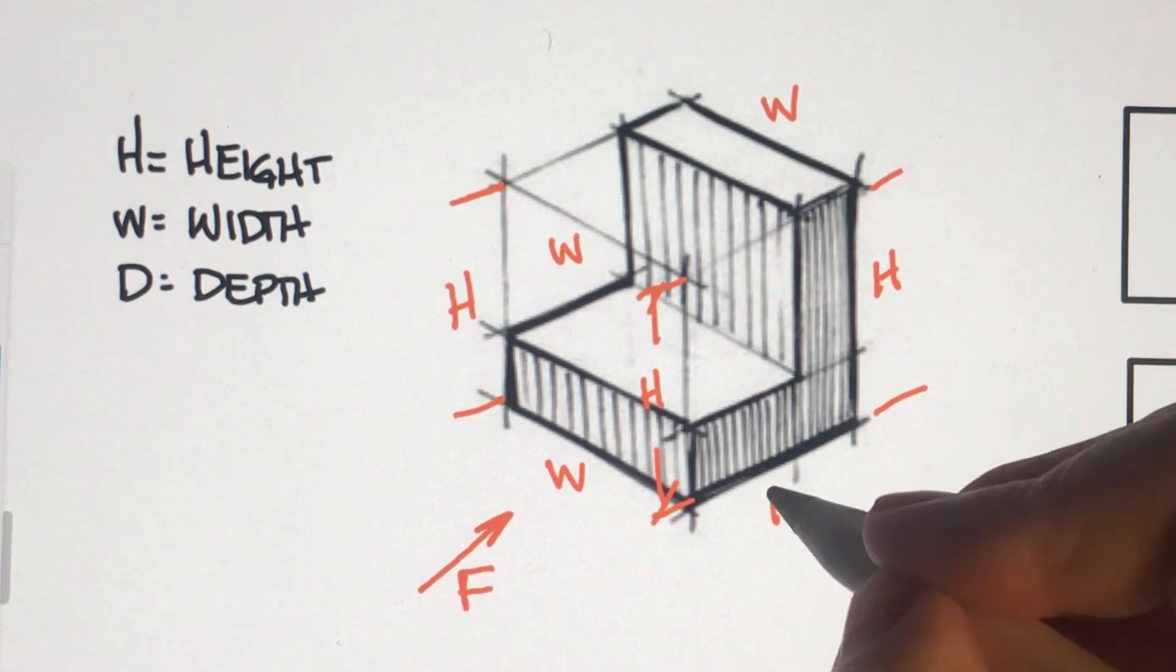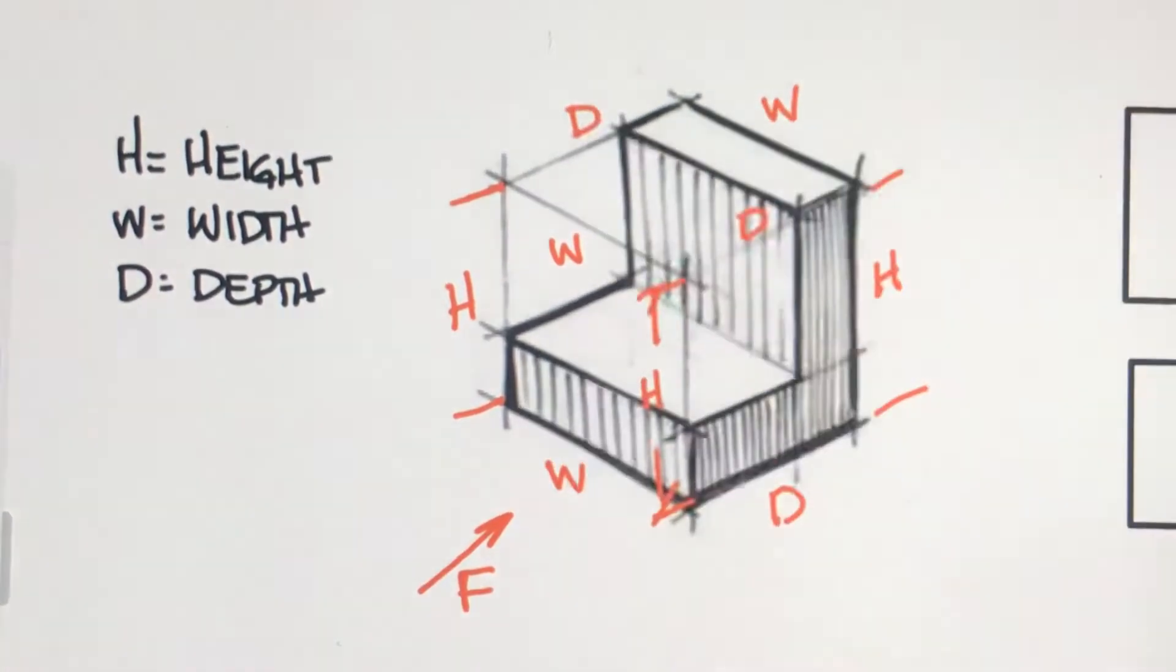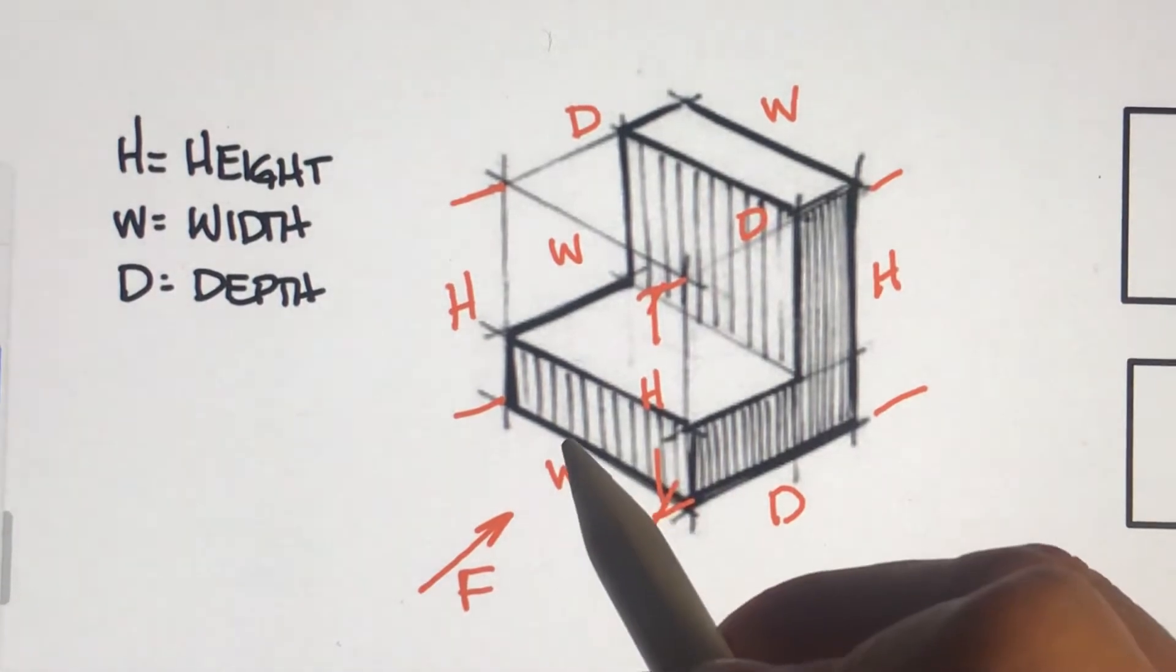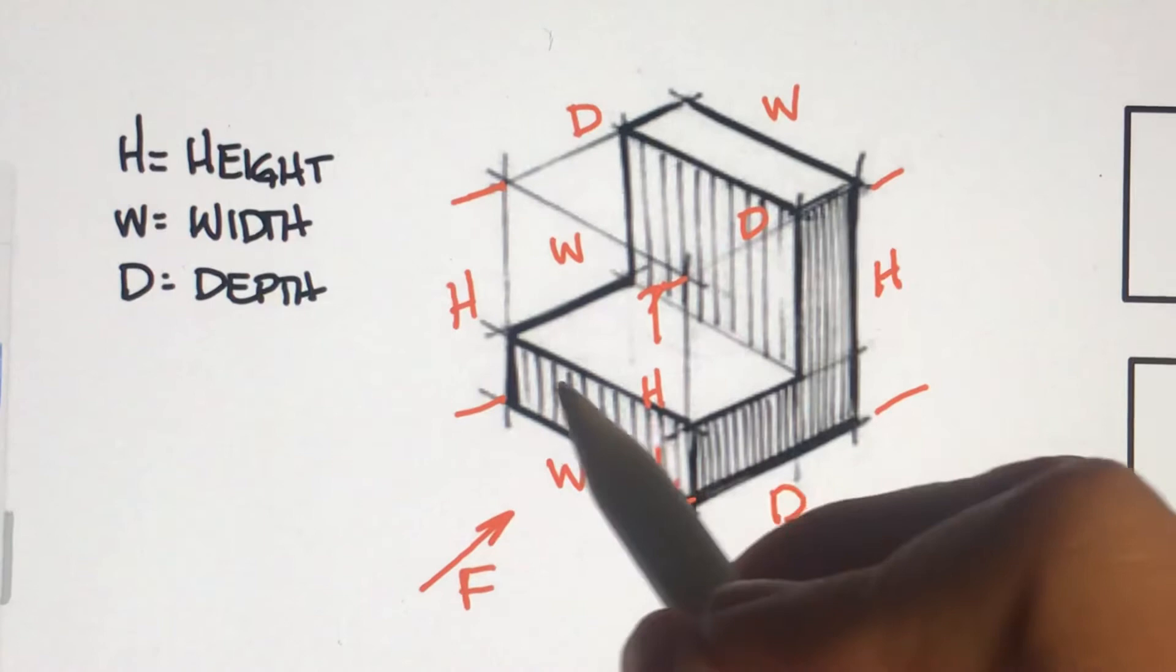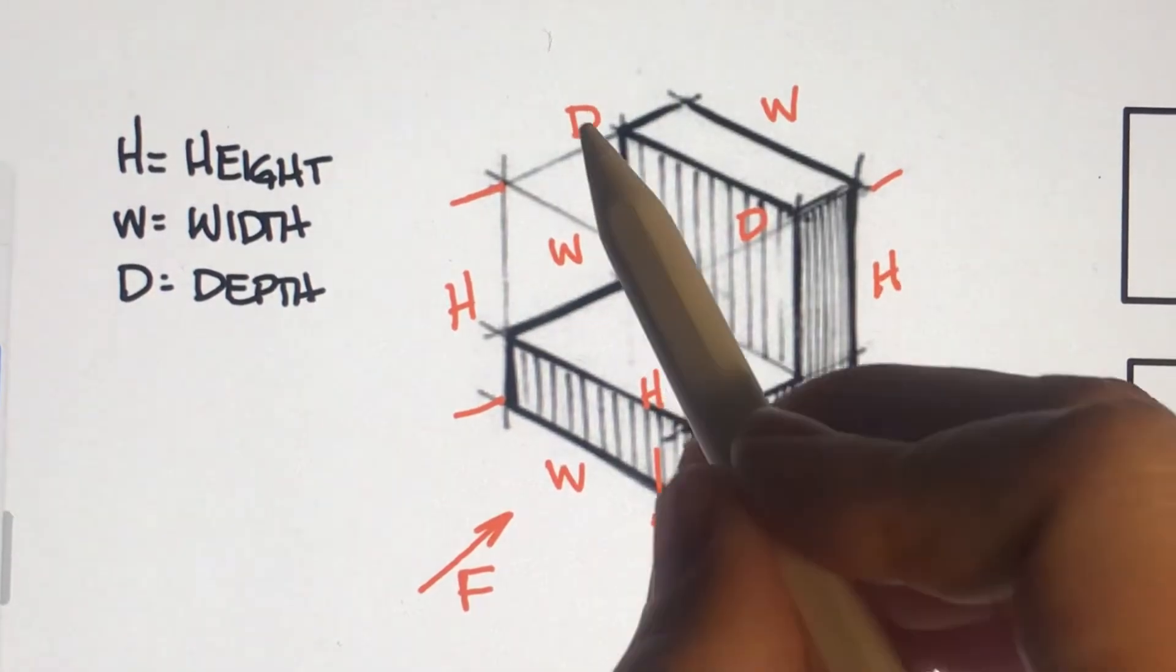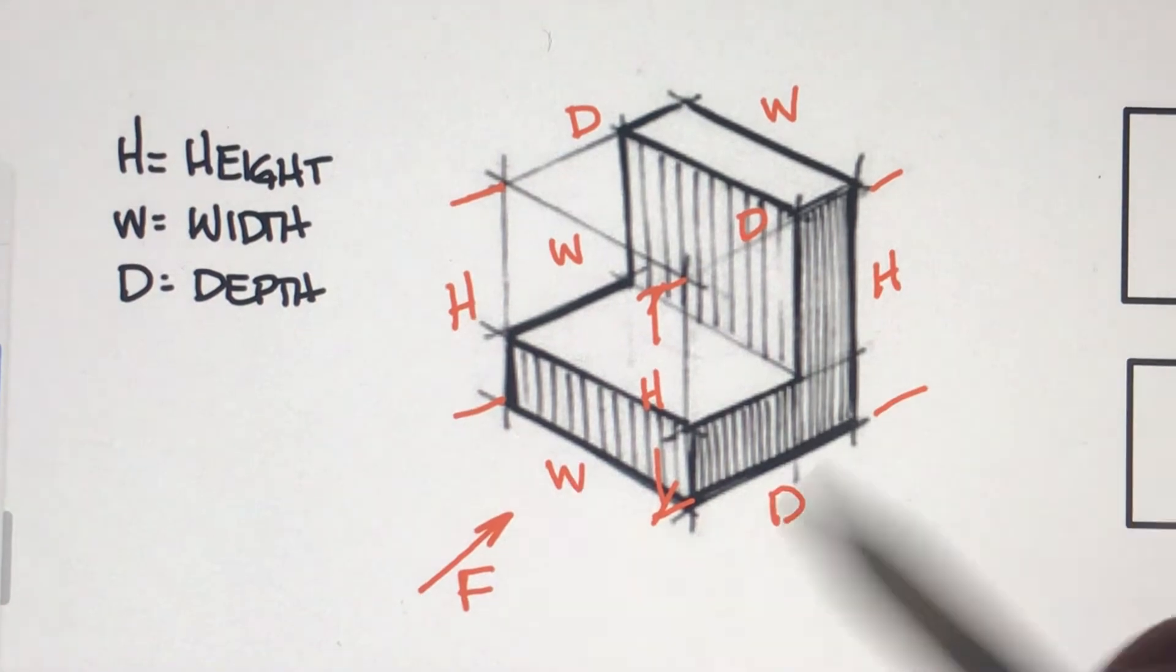Now we've added depth because these are our three-dimensional parts that we are creating views. So the depth can be here, can be up here, or here. So when you're given an isometric pictorial or a 3D part and it's dimensioned, you will be able to find the height, the width, and depth in these positions.